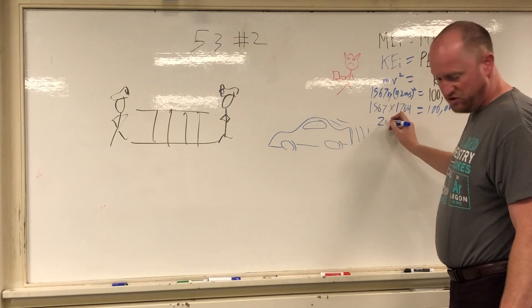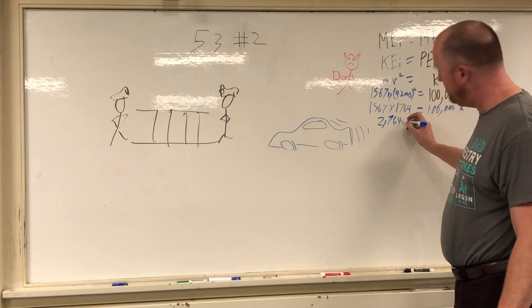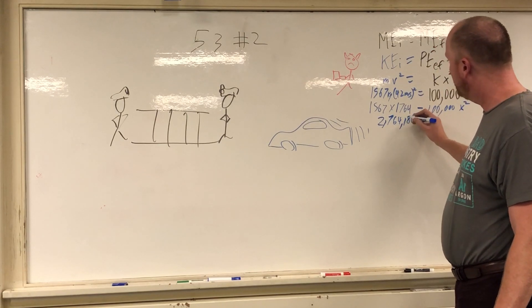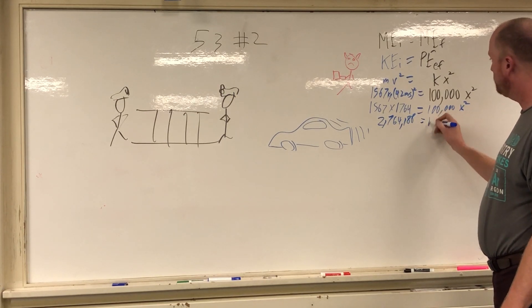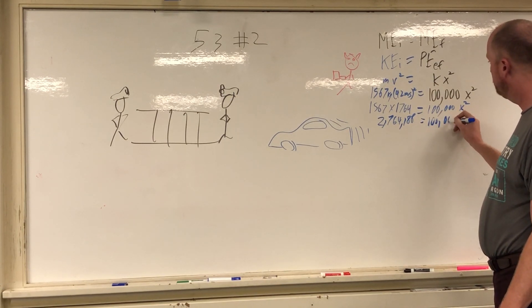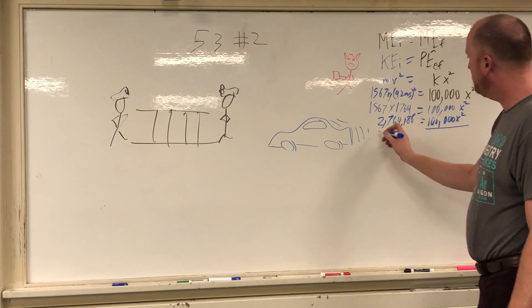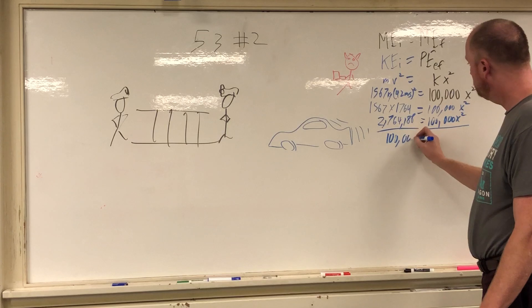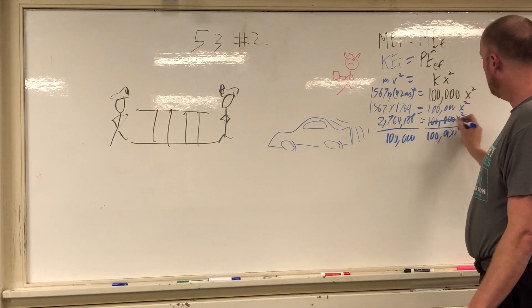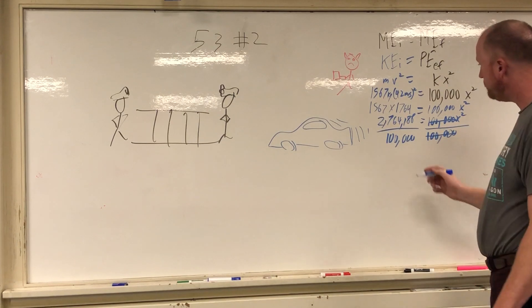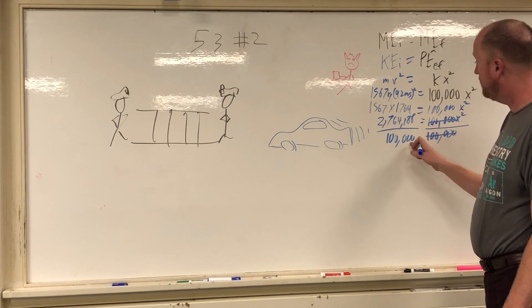I'm just going to stick with the blue marker. You multiply these together you get 2,764,188. You could probably round a little bit if you don't want to deal with all these digits. It is equal to 100,000 x squared. Divide both sides by 100,000.